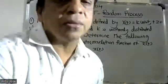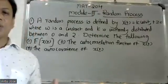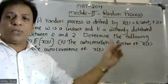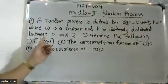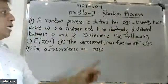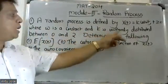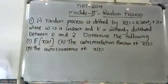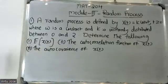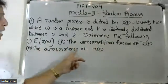Good morning, friends. In this playlist, M8204 module number 3, random process. A random process is defined by x(t) = k·cos(ωt), t greater than 0, where ω is a constant and k is uniformly distributed between 0 and 2. Determine the following: expectation of x(t), the auto-correlation function of x(t), and the auto-covariance of x(t).